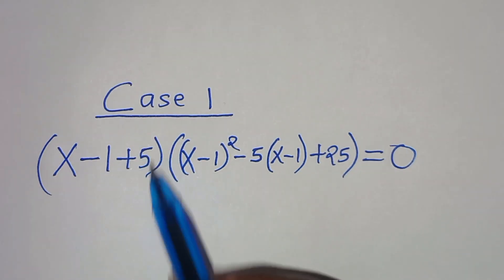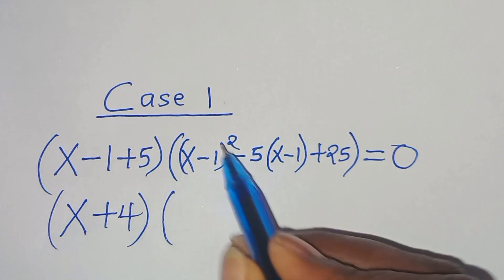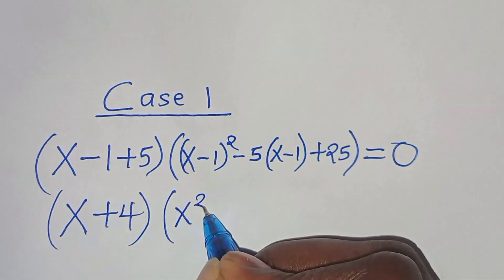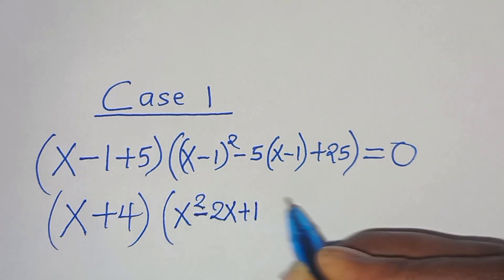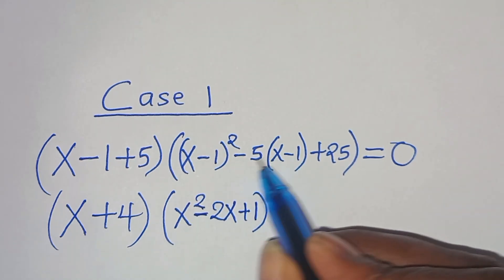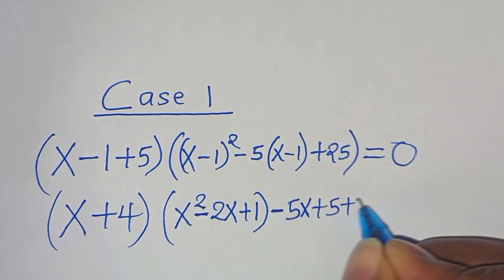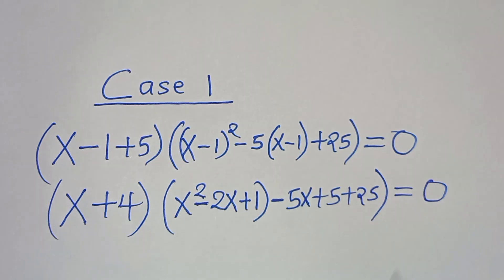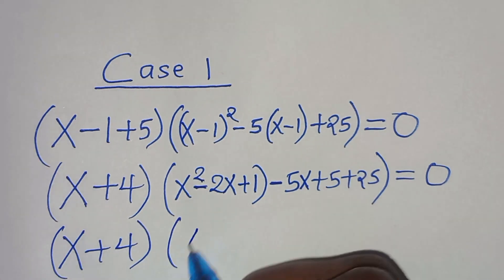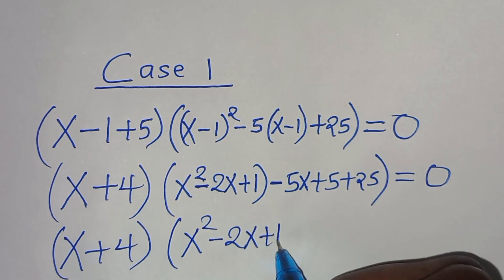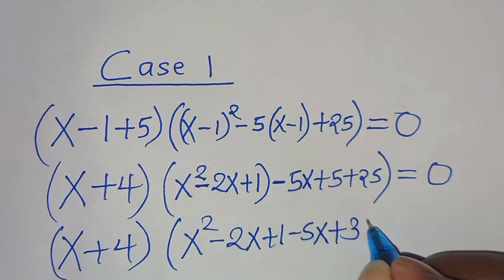Here (x minus 1 plus 5) simplifies to (x plus 4). Expanding (x minus 1)² gives x² minus 2x plus 1. Then minus 5 times (x minus 1) gives minus 5x plus 5. Plus 25. So we have (x plus 4) times [x² minus 2x plus 1 minus 5x plus 5 plus 25] equals 0.